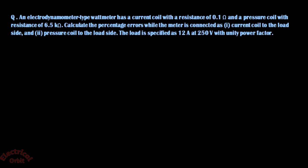Now let's see an application. An electrodynamometer-type wattmeter has a current coil resistance of 0.1 ohm and a pressure coil resistance of 6.5 kilohm. Calculate the percentage errors when the meter is connected with the current coil to the load side, and then with the pressure coil to the load side.